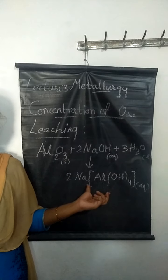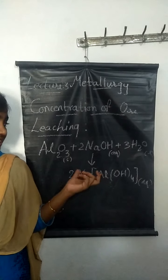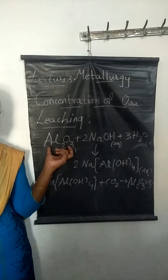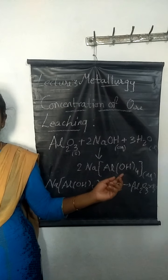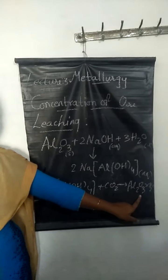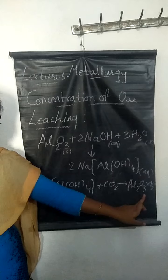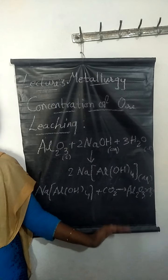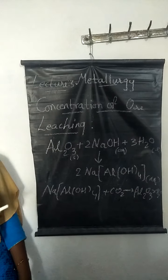The sodium aluminate complex forms at around 475 Kelvin and 35 to 36 atmospheric pressure. When this complex is treated with carbon dioxide gas, we obtain hydrated Al2O3. On heating the hydrated Al2O3, the water molecules are removed and we get aluminium oxide, Al2O3. This aluminium oxide can be further purified to get aluminium. This demonstrates leaching of bauxite ore using a solvent in which aluminium is more soluble than the impurities.